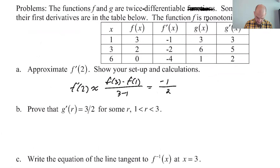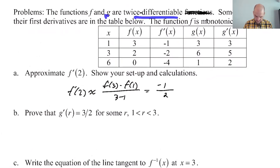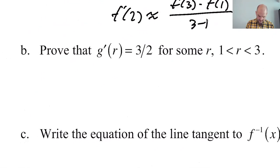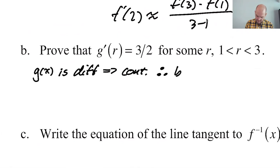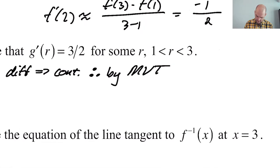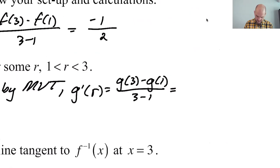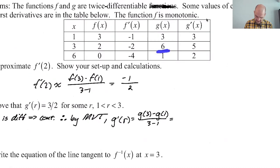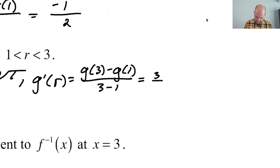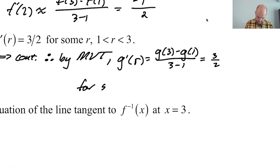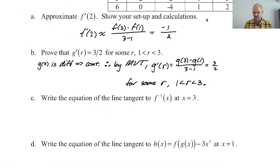Prove that G prime of R equals three halves for some R. G is differentiable because it's twice differentiable, which implies continuous. By the Mean Value Theorem, G'(R) = (G(3) − G(1)) / (3 − 1) = (6 − 3) / 2 = 3/2, for some R where 1 < R < 3. That's straight up Mean Value Theorem.